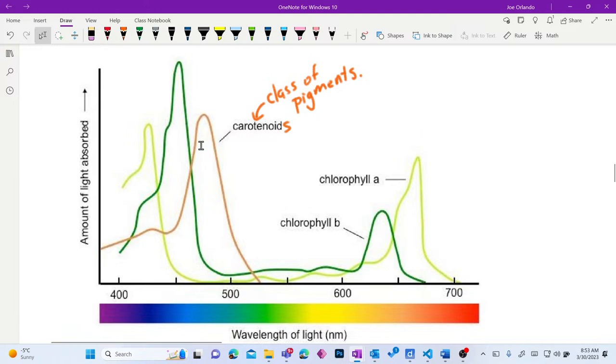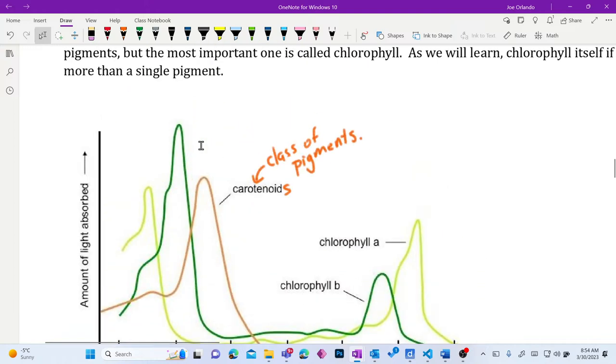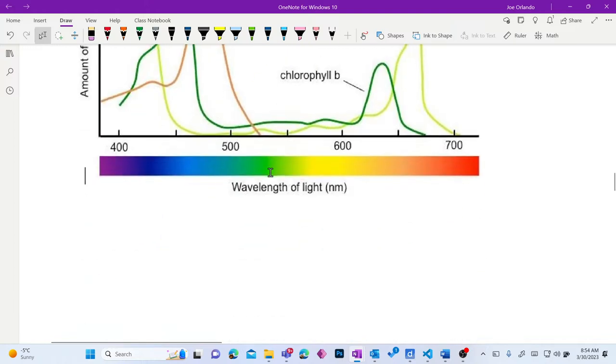There are other pigments involved. Those beautiful fall colors were in there the whole time. You just didn't see them because they were overwhelmed by all the chlorophyll, which gives us that green. When the cold comes and that chlorophyll degrades, you see those xanthophylls and beta carotenoids.